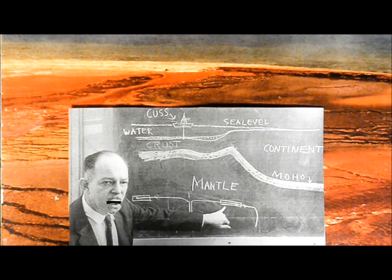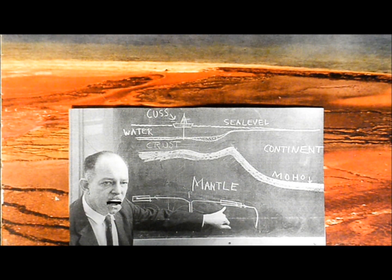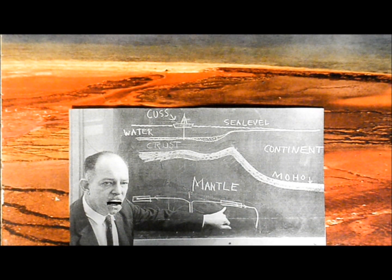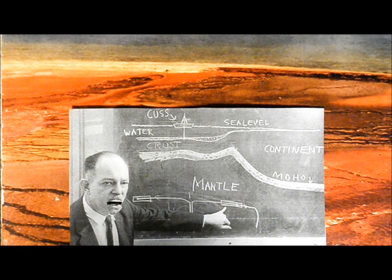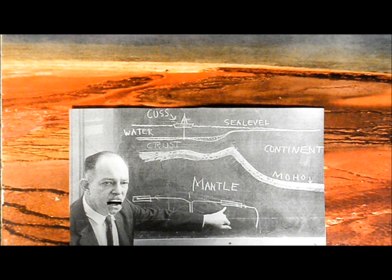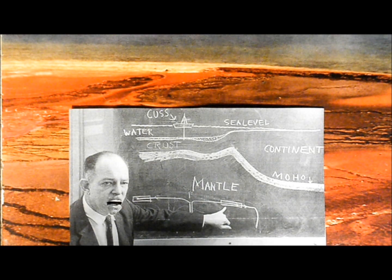In 1960, Harry Hess described the mechanism of seafloor spreading, where new seafloor is formed at spreading ridges. Huge tectonic plates carry the continents, explaining continental drift. The theory of plate tectonics was born.